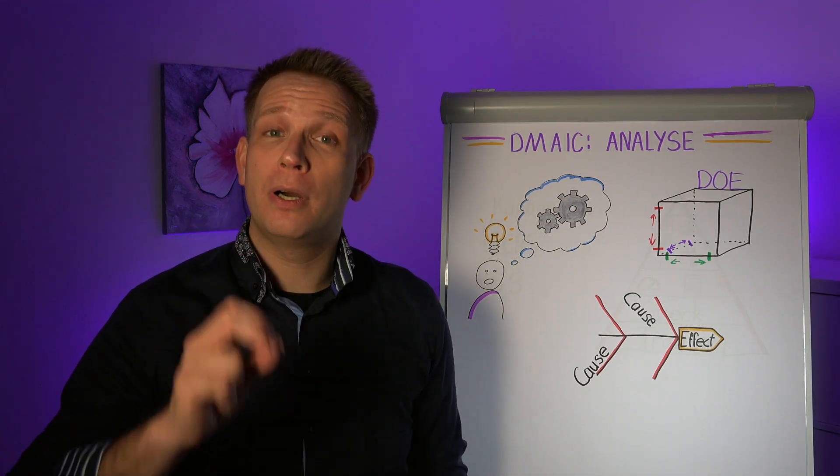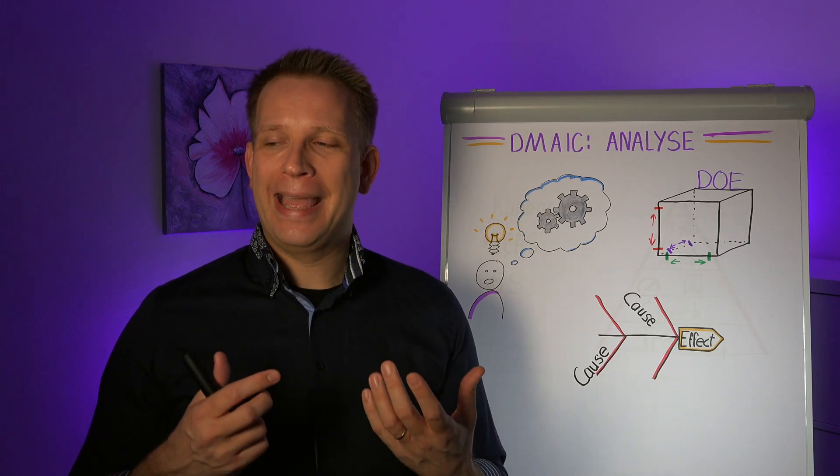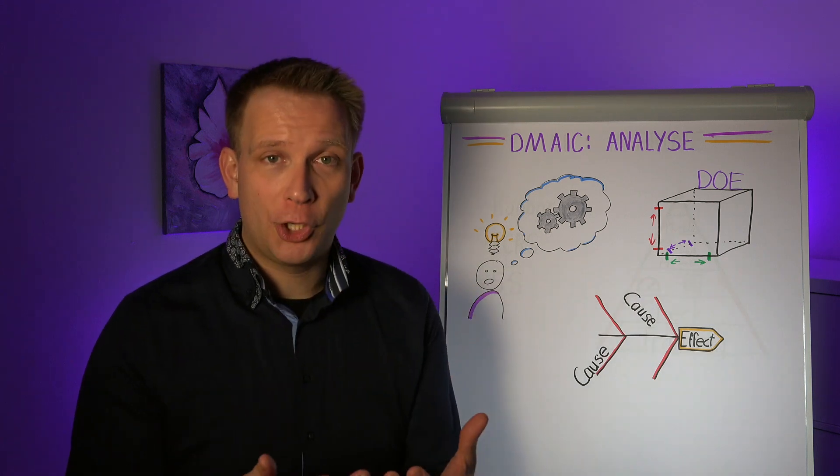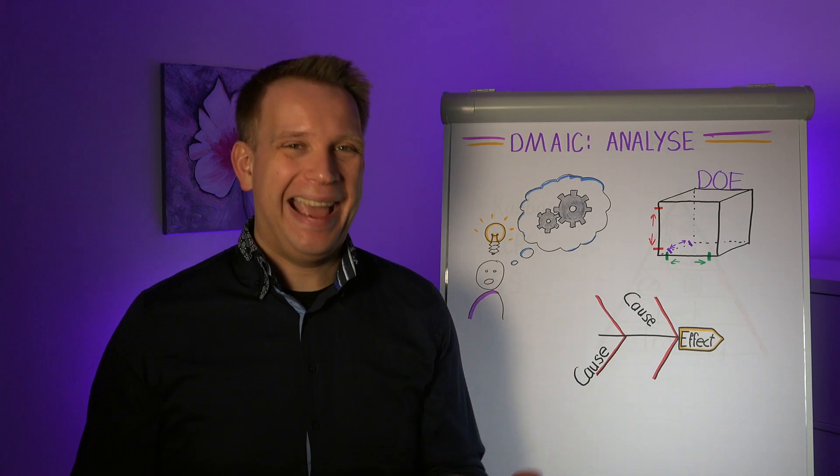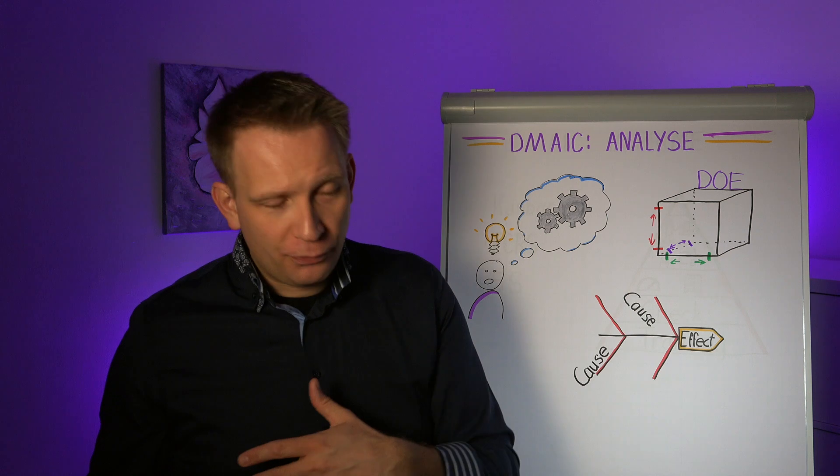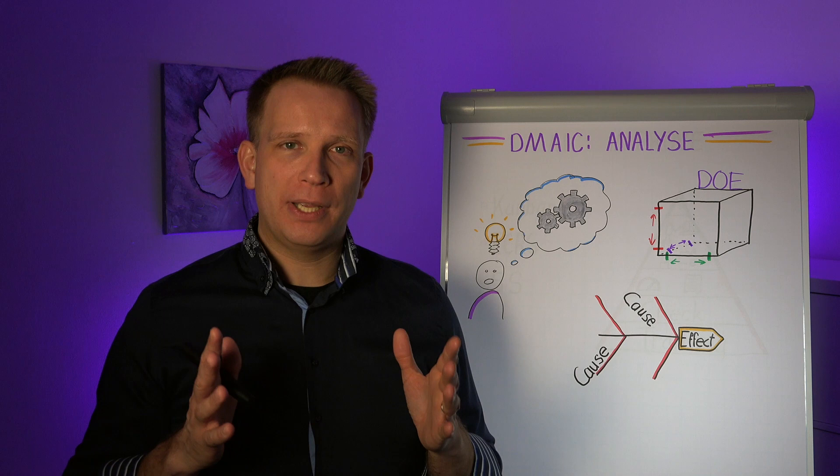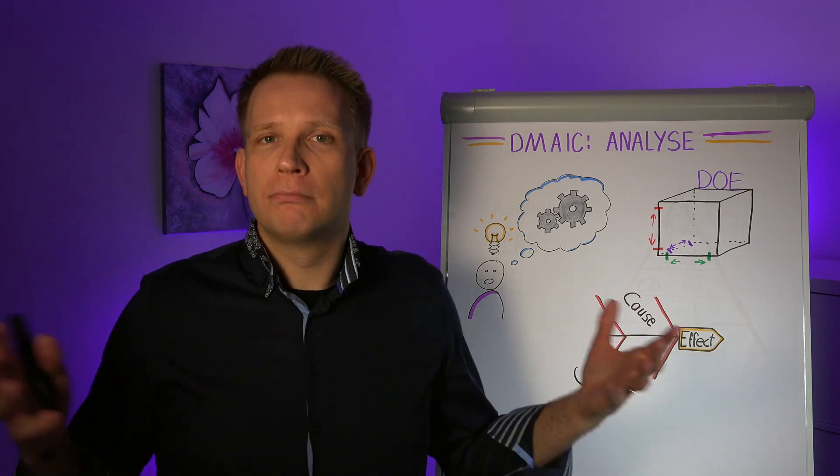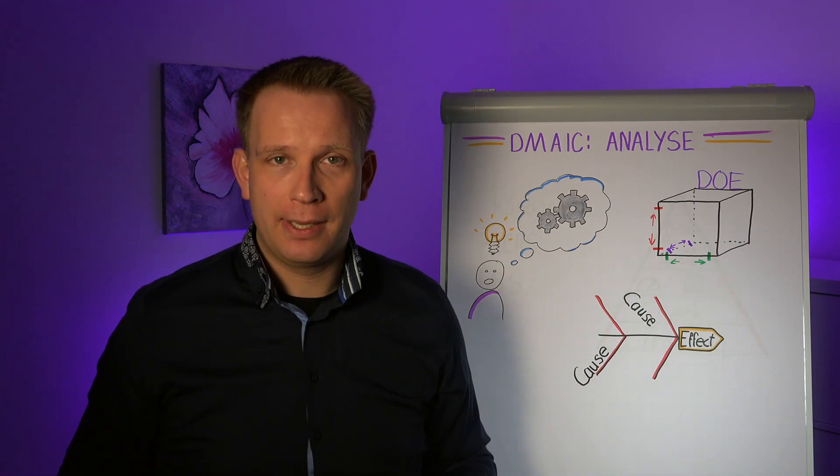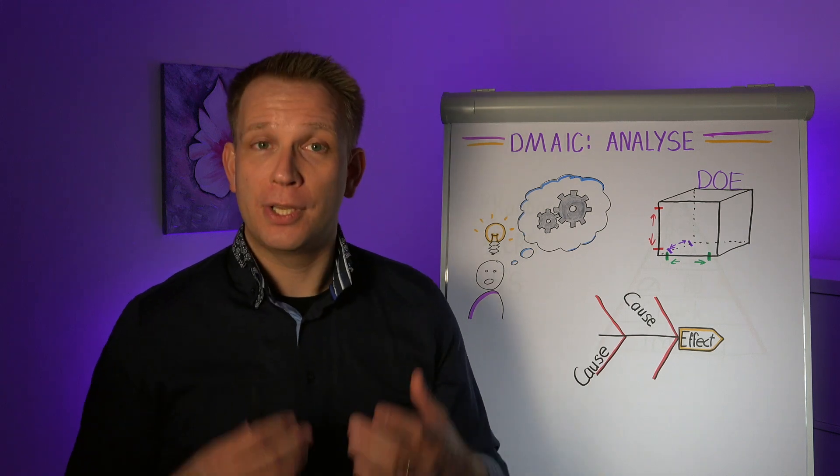Now here, when we are in a process optimization type of DMAIC, you do this project when it's not a problem that suddenly occurs. This is no single event. We have had this high variation, or this problem, or this poor performance, or whatever, we've had it coming back for a long time. So we're not really looking for that specific change, we're just looking for the factors. What causes there to be some effect? What are the factors that influence the outcome of the process the most?